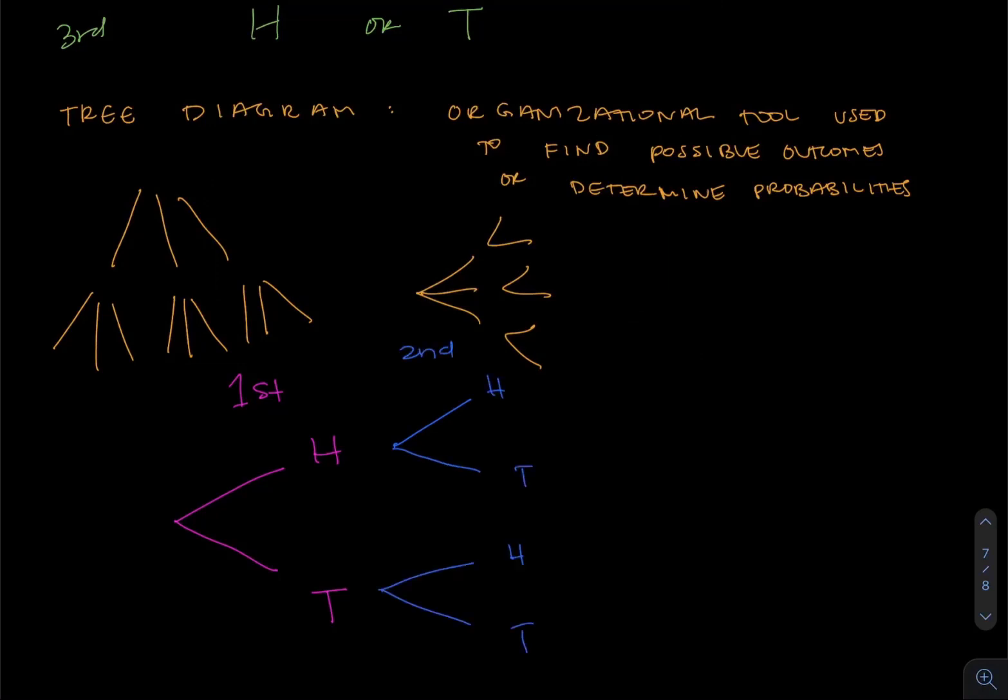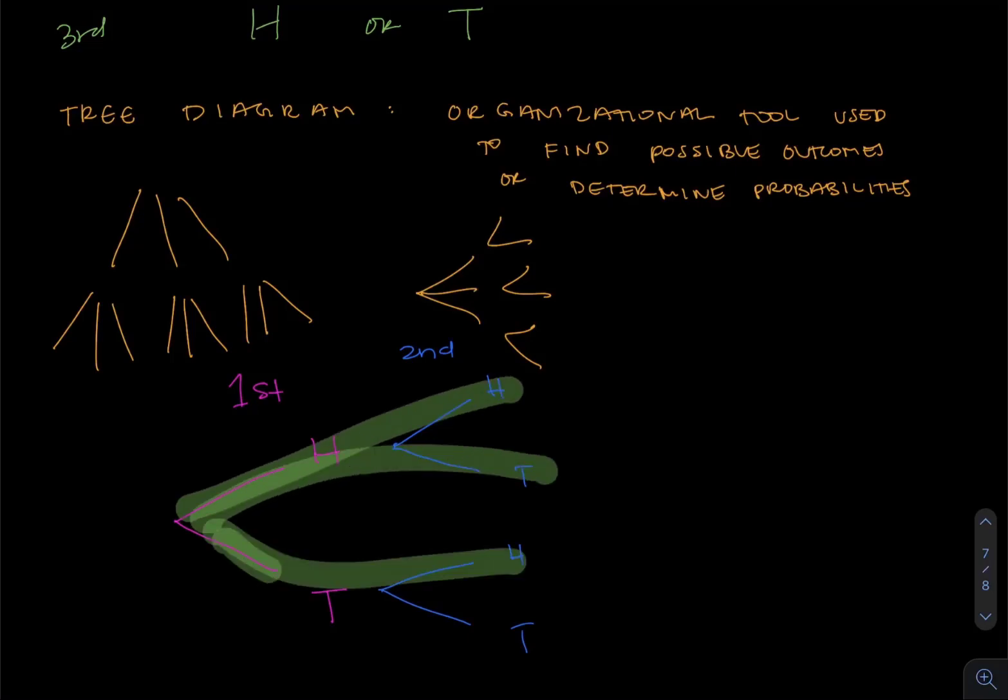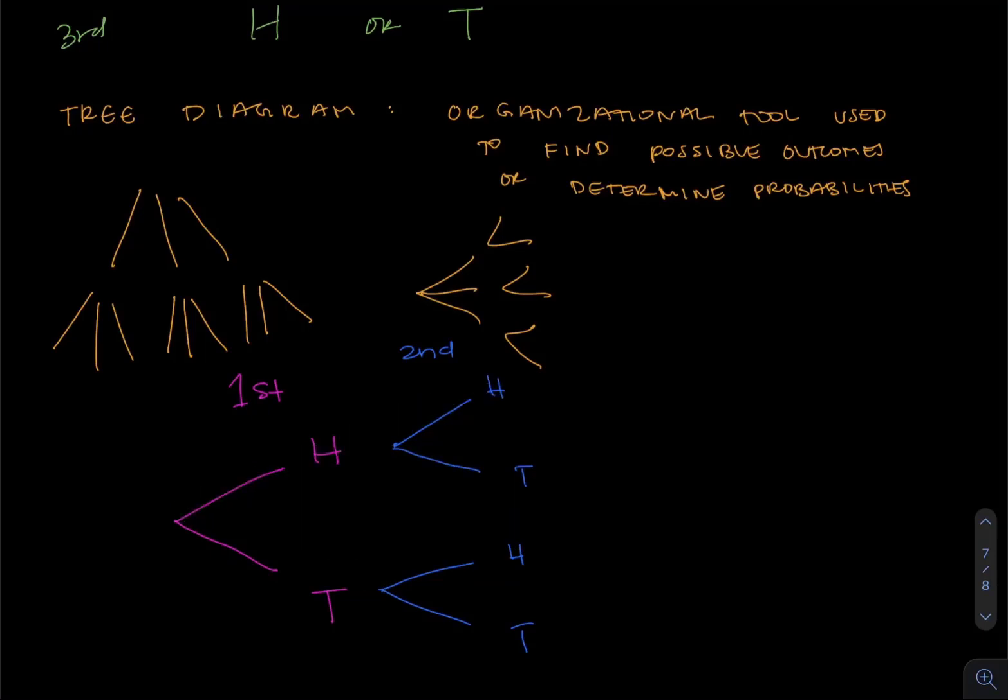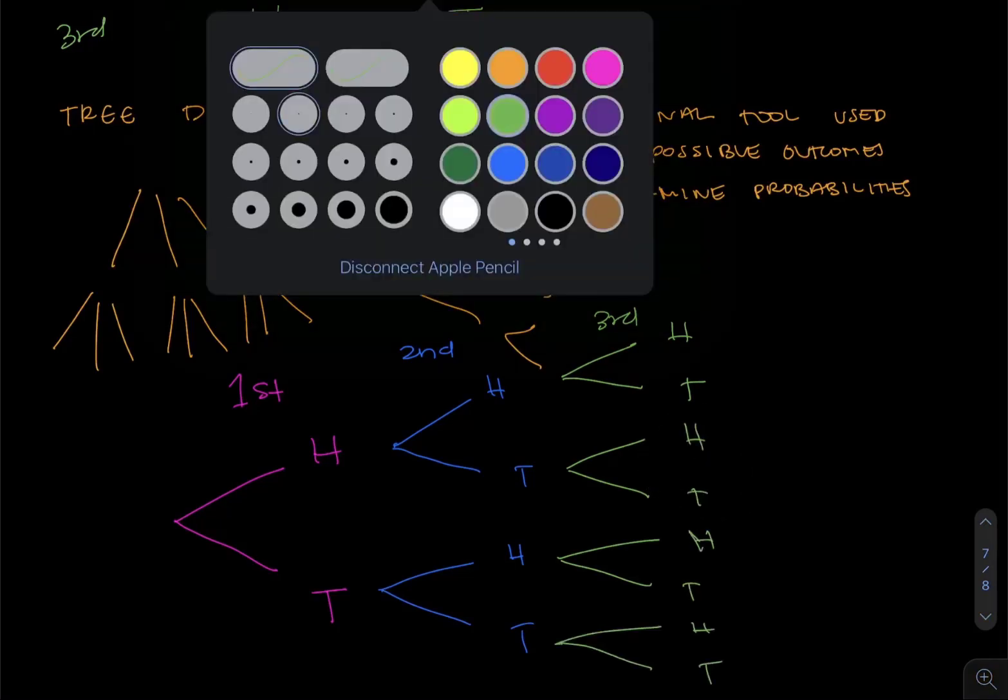Notice already, if we go down these branches, one, two, three, four, we have four possible outcomes so far. Now on that third coin toss, it really doesn't matter what we got on the first coin toss. There's no connection to what happened in the second coin toss. The coin doesn't remember what it was before. So on the third coin toss, we can get heads or tails for any of these last possible outcomes.